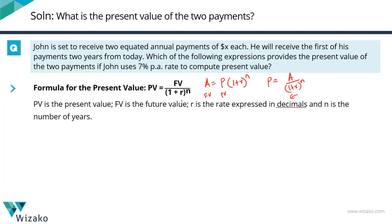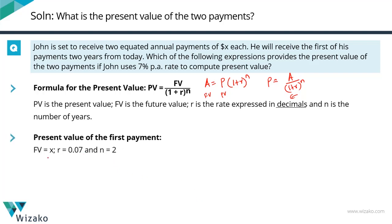We will plug in the values for each of the two payments. For the first payment, n equals 2, r is 0.07, and the future value is X dollars. So the present value of the first payment is X divided by (1 + 0.07)², which translates to X upon 1.07 squared. This is the present value of the first payment he is going to receive.